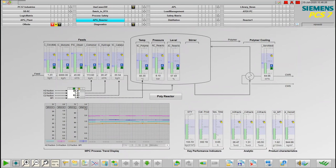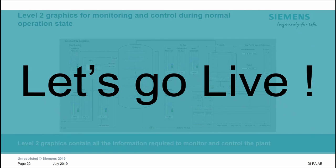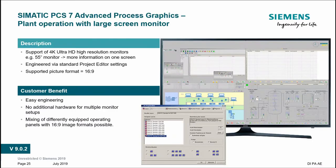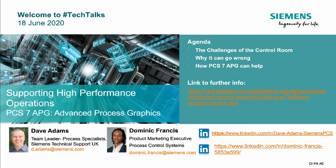That concludes the live demo. Dom has one last point about the quadrant display - PCS 7 now supports 4K screens, which means we can use massive large monitors for operator stations. What Dave was talking about with the quadrant display can now be displayed on a large screen, with the benefits of having APG graphics in each of the four quadrants. This gives operators the most relevant information whilst they're operating their plant. I hope you've enjoyed the presentation today.